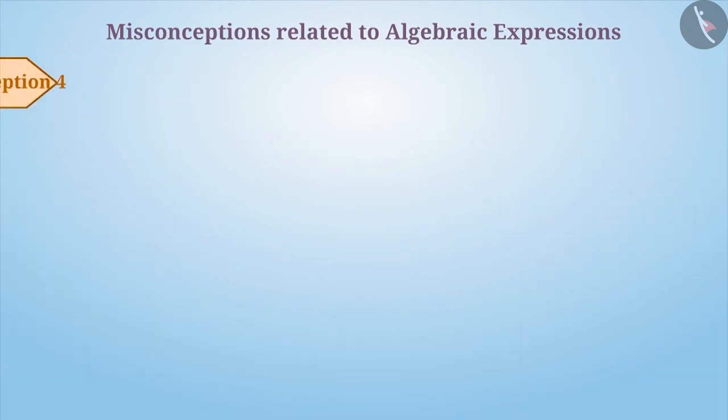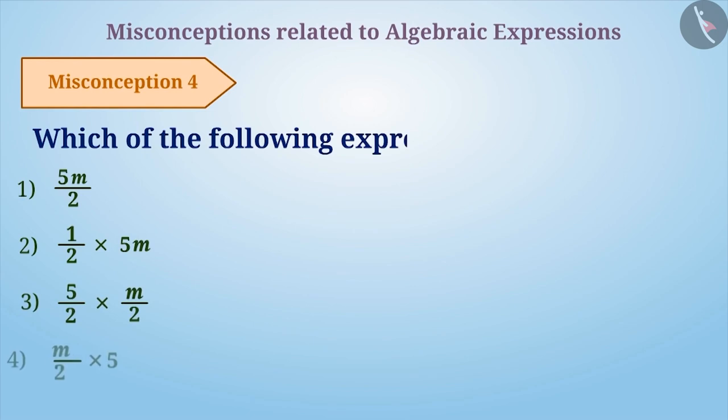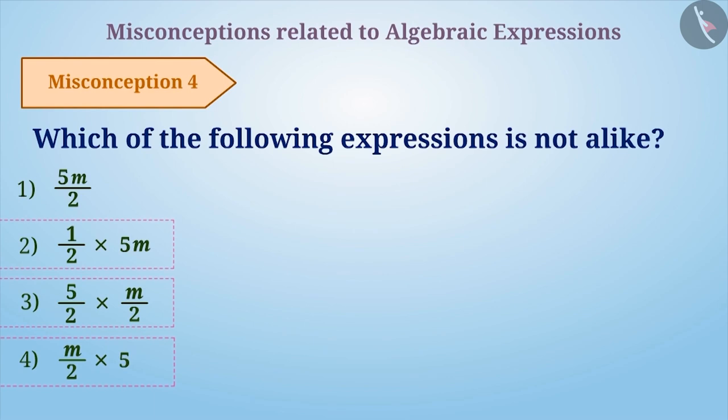Misconception 4. Which of the following expressions is not alike? There is a multiplication sign in each expression except in 5m by 2. With this understanding, most of the time the answer given is 5m by 2. This is a misconception.